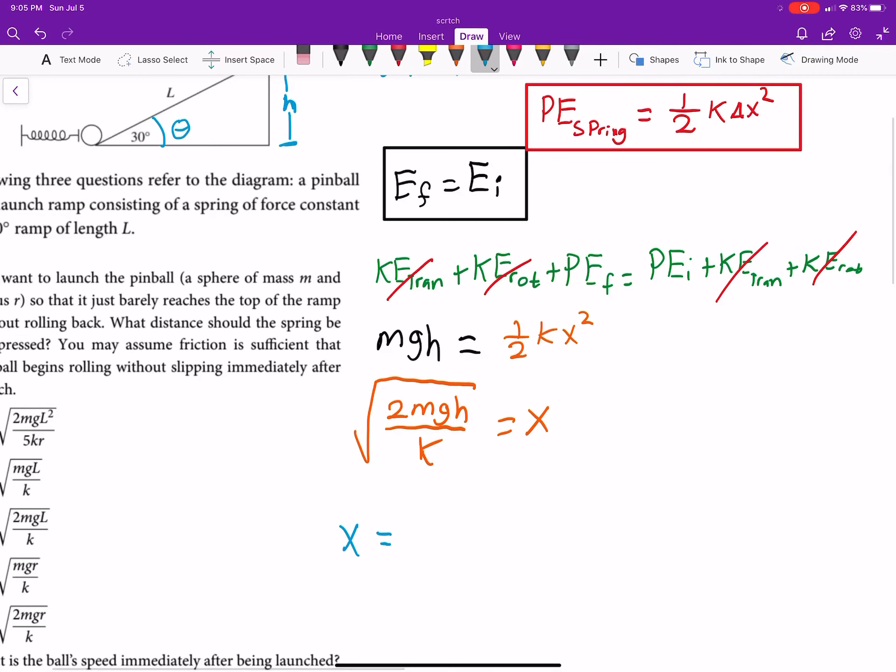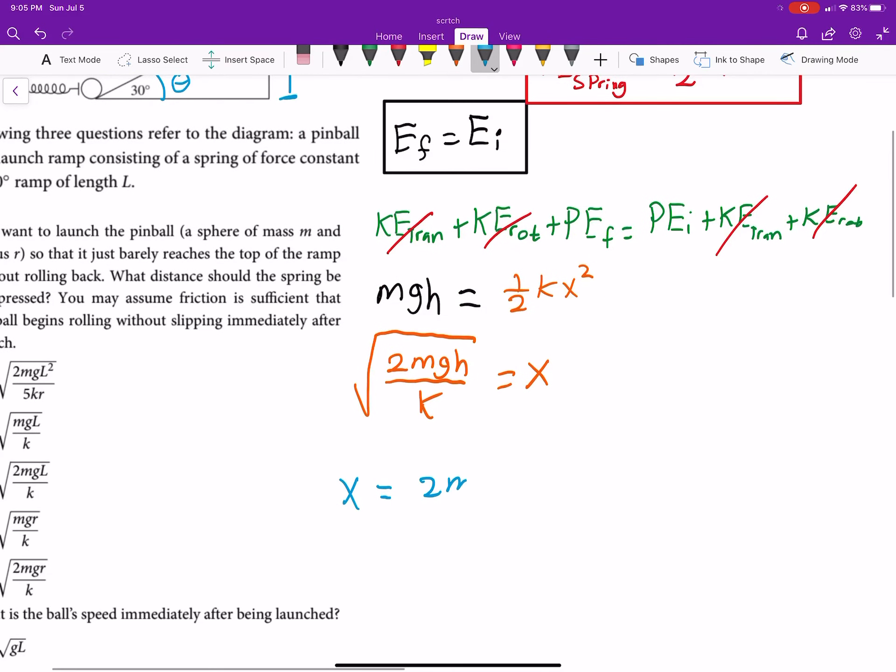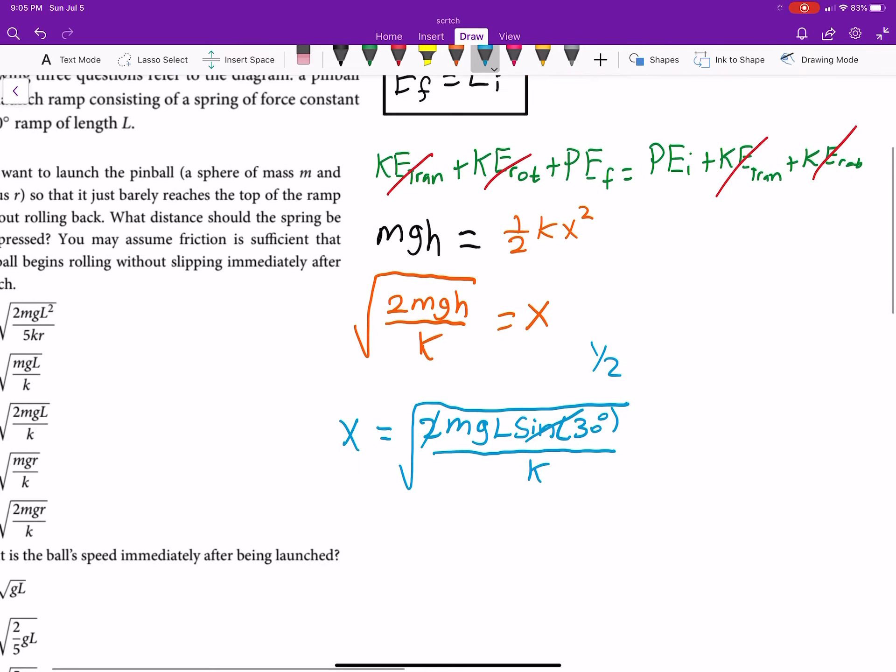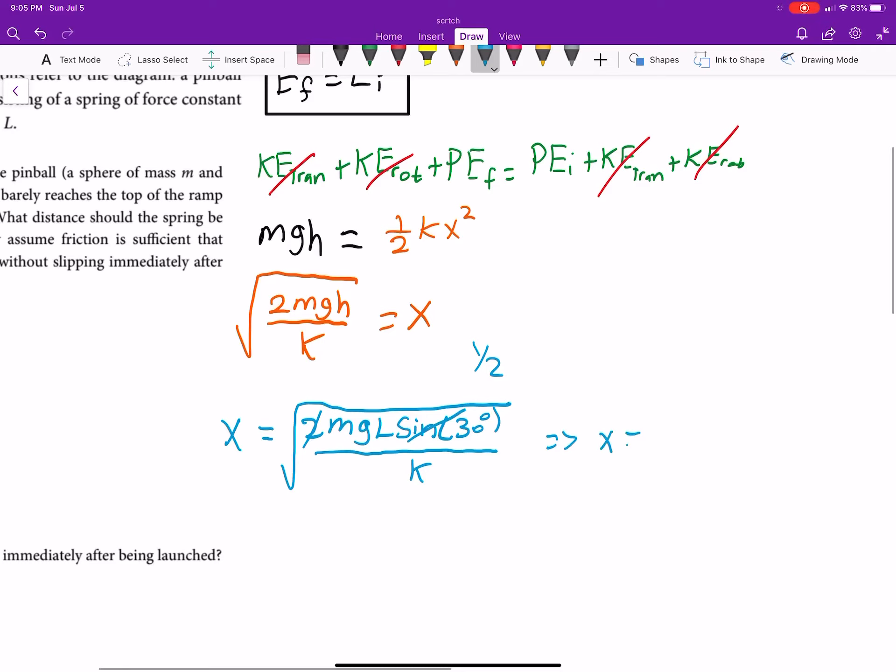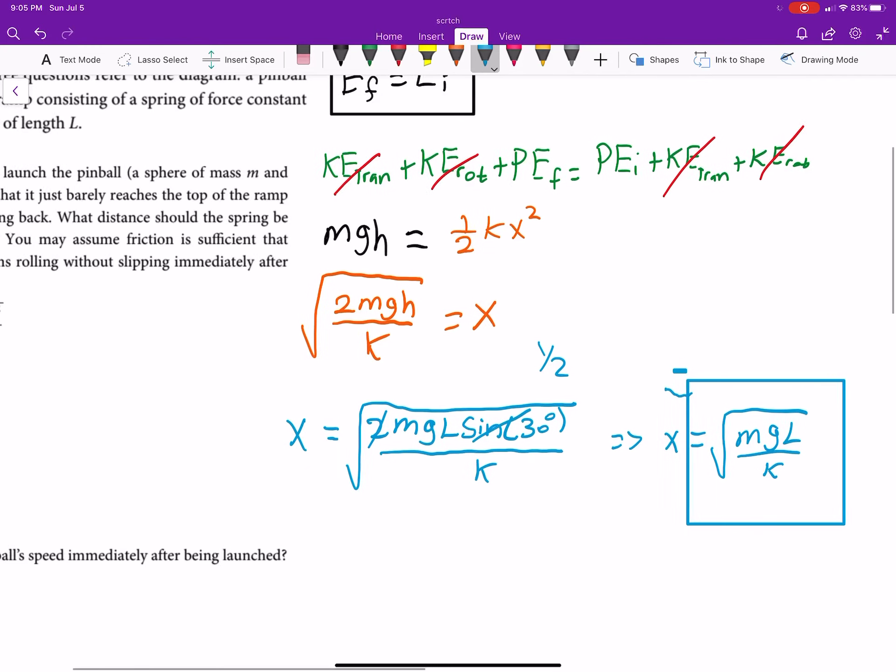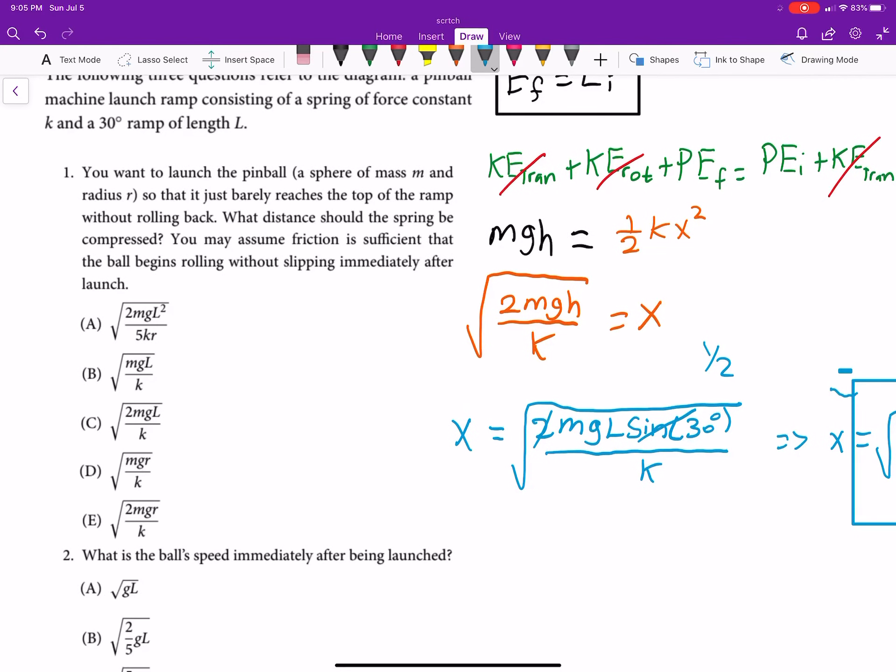So, now we can write this as x equals 2mg L sine of theta, which they give us as 30 degrees, divided by k. Let's see. Sine of 30 degrees is one-half. So, if you can imagine there just being a half here, it'll cancel out with this two. And, you'll get x equals mgl divided by k square root. That's the answer. Square root mgl over k.